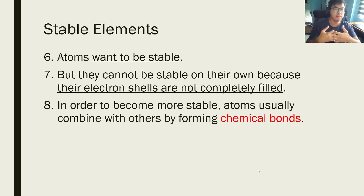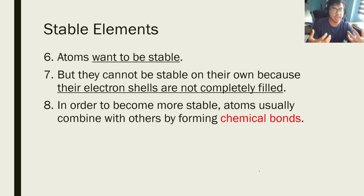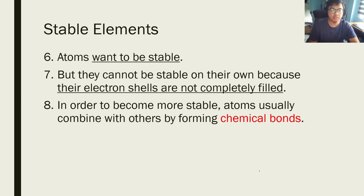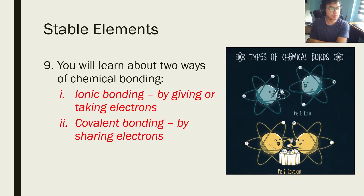It's sort of like marriage, for example — one person is not complete, so in order for that person to feel complete, that person has to marry another person. Atoms are basically the same way: they are incomplete on their own, their electron shells are not filled in completely. So what they do is they go to another atom and form bonds with them in order to complete themselves.